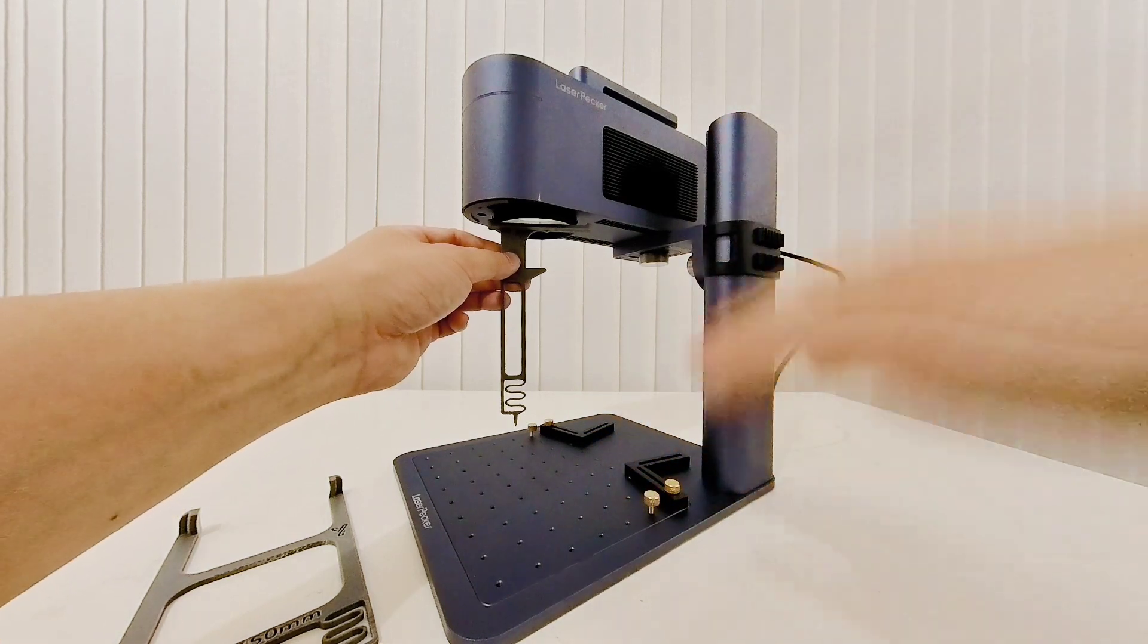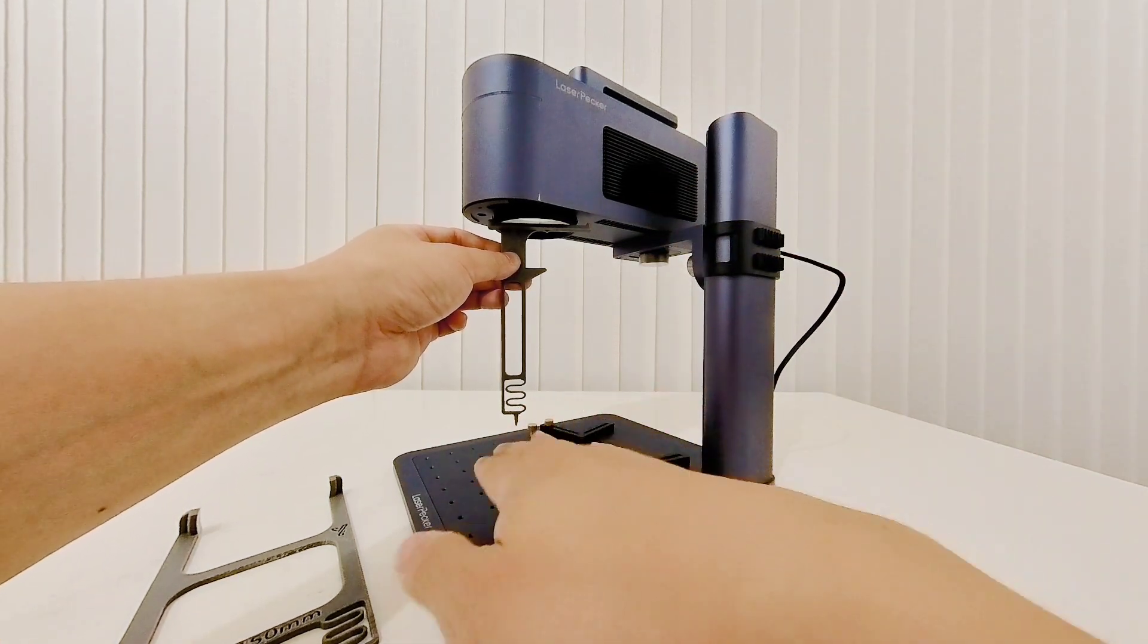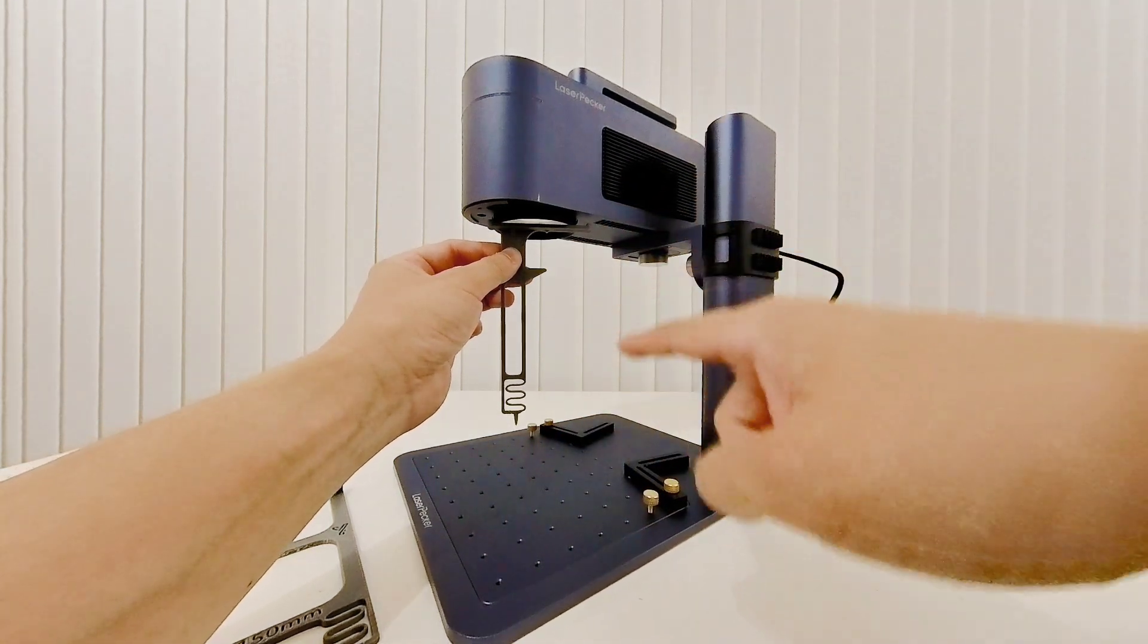Then change the height of your engraver until the tip of the probe touches the surface to be engraved and that will give you 150 millimeters exactly.